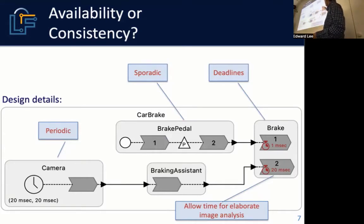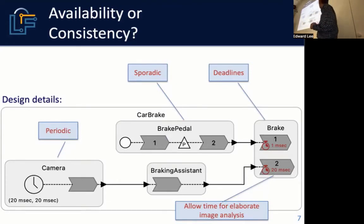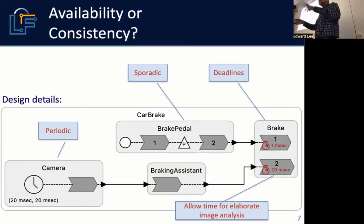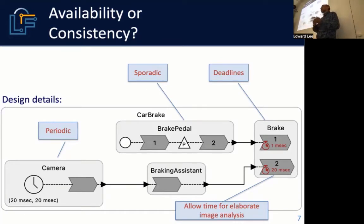In your brake subsystem you might have two different reactions to these two inputs, and put them in some order. Let's say the reaction to the brake pedal has priority over the reaction to the braking assistant. You might associate deadlines with these — a very tight deadline for the brake pedal, like one millisecond, and a looser deadline for the braking assistant, which you determine through engineering based on what's achievable and what's acceptable for the safety you're trying to achieve.